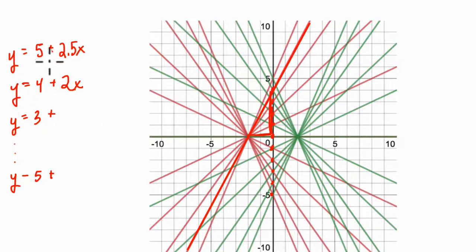So notice that the intercept went from five to four, went down one, but the slope only went down a half. The intercept goes down by one, the slope goes down by a half. If the next one goes down to 1.5, then we have our pattern and we're all set.